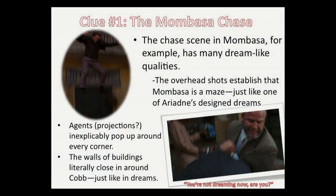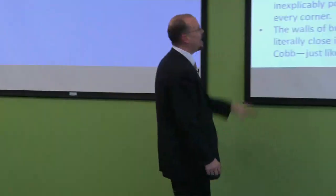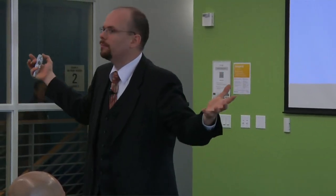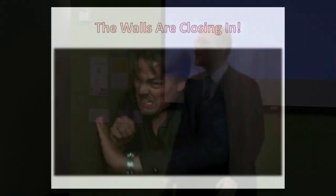Nolan leaves us many clues that suggest exactly this. If you look at the Mombasa chase scene that's supposed to happen in the real world, it has very many dreamlike elements. The overhead shots establish that Mombasa is like a maze. The agents that are after him literally pop in and out of nowhere inexplicably. And the walls of buildings literally close in around him just like they do in dreams. Literally appearing out of nowhere just like they do in dreams. The walls close in around him just like they do in dreams.